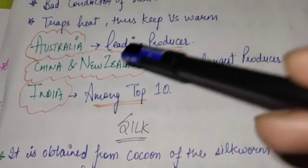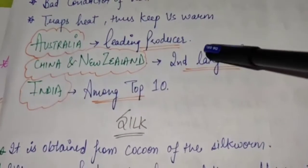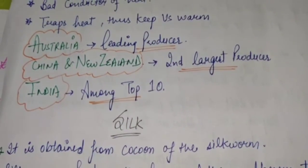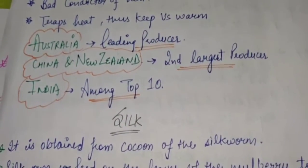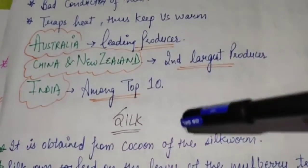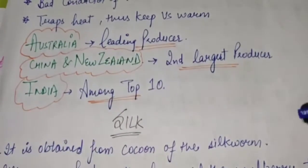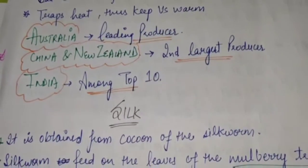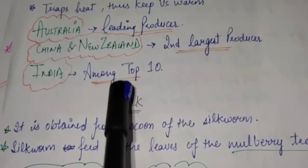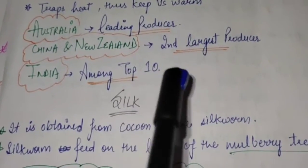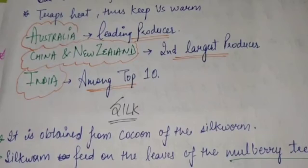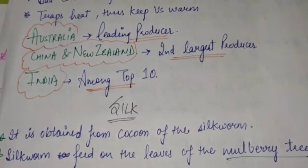Australia is the leading producer of wool in the world, followed by China and New Zealand as the second largest producers. India has kept its position among the top ten countries of the world in wool production.